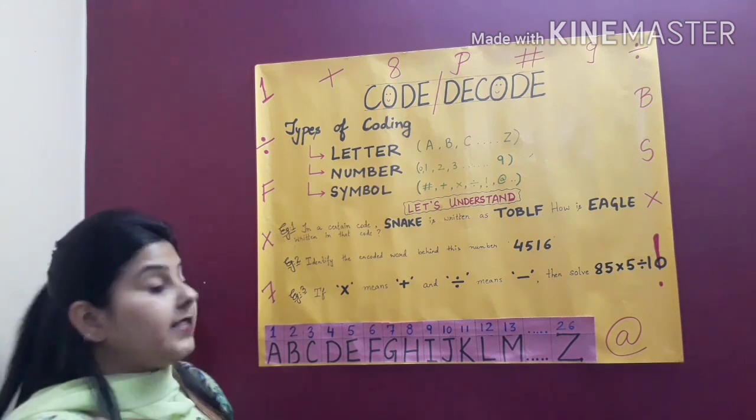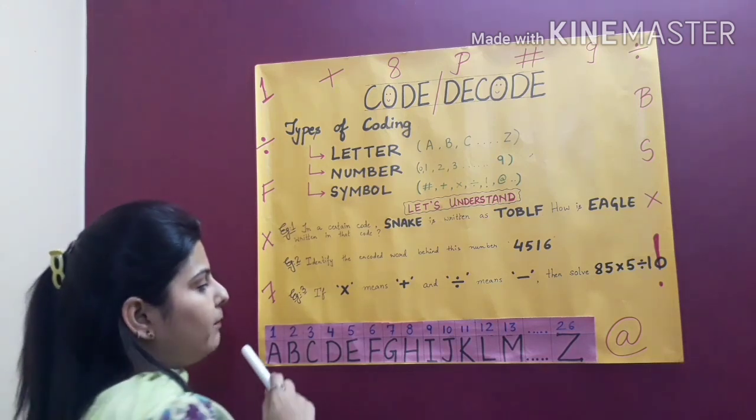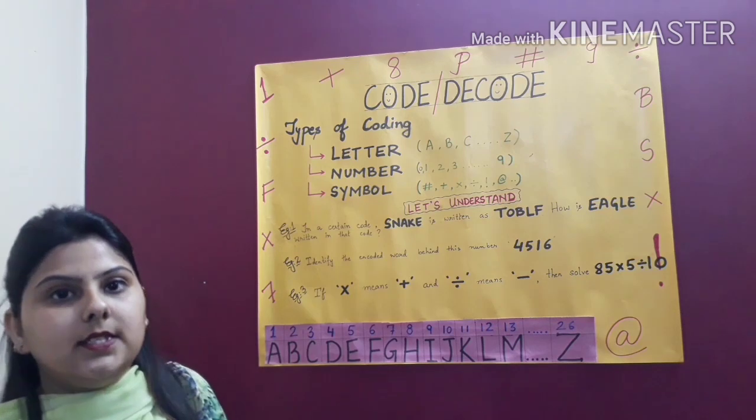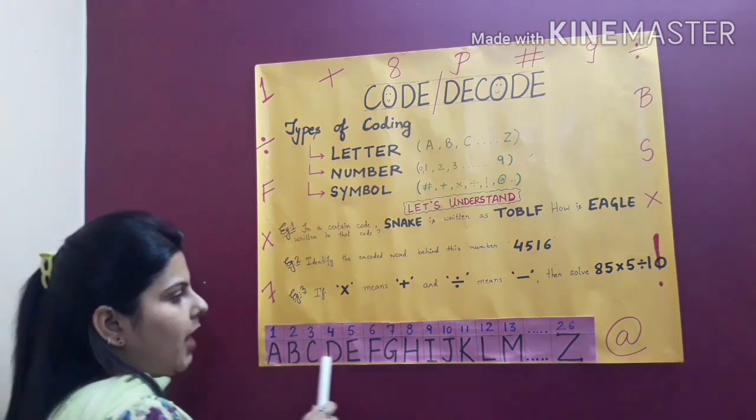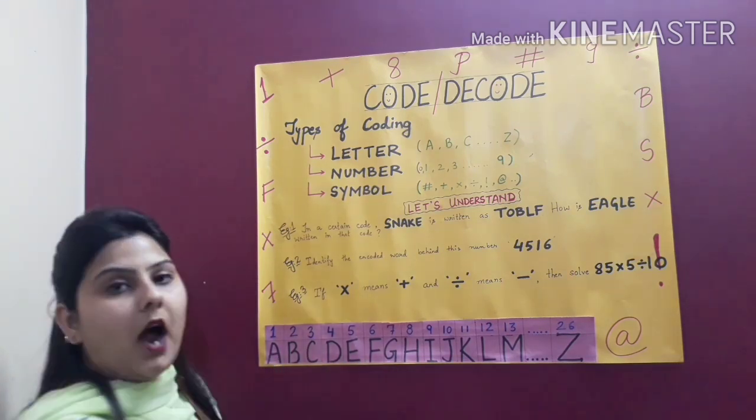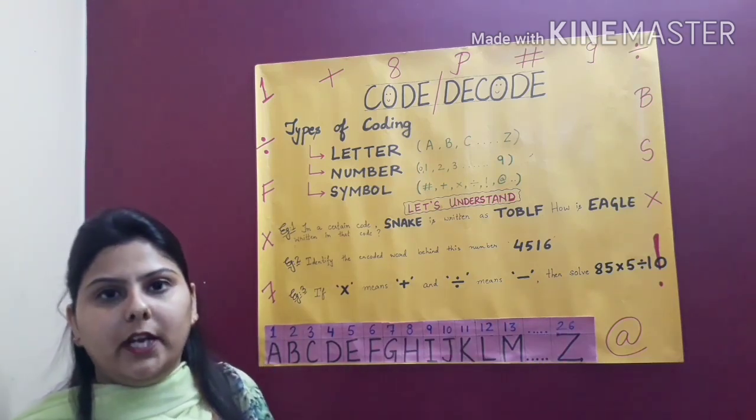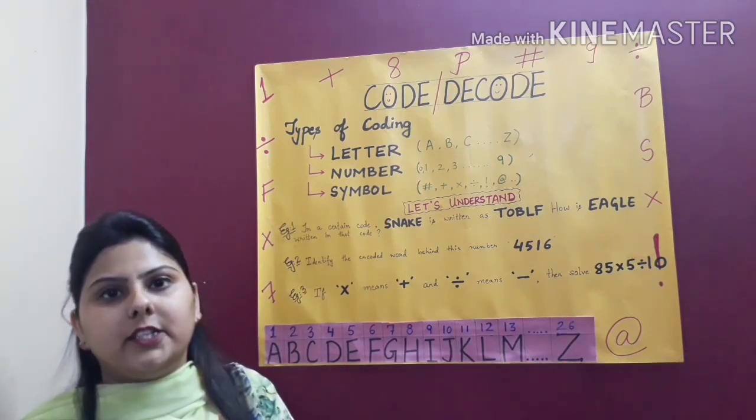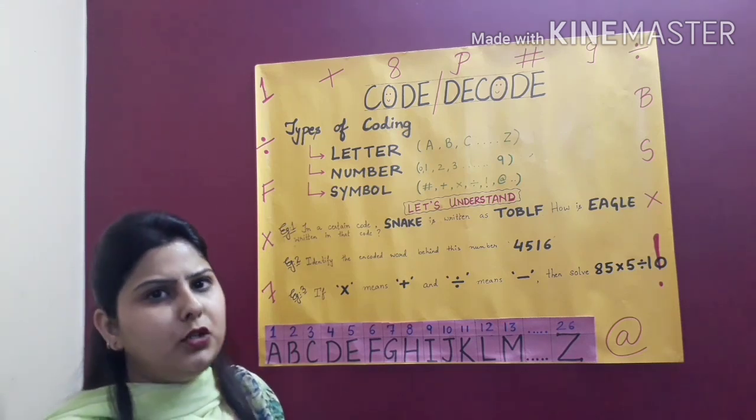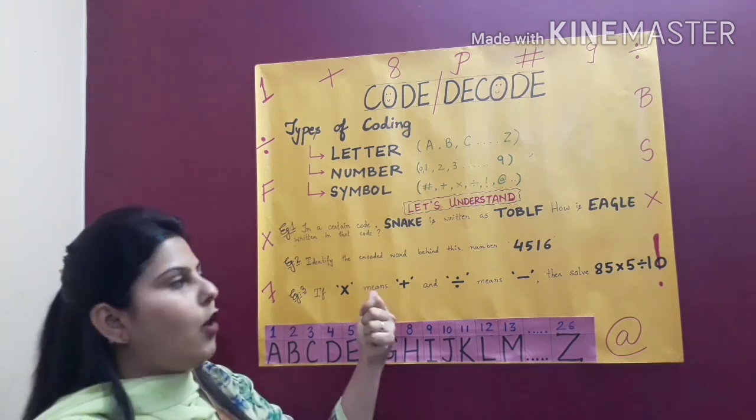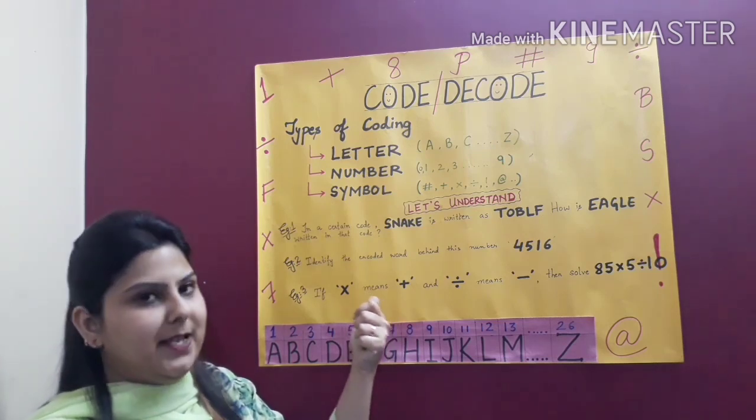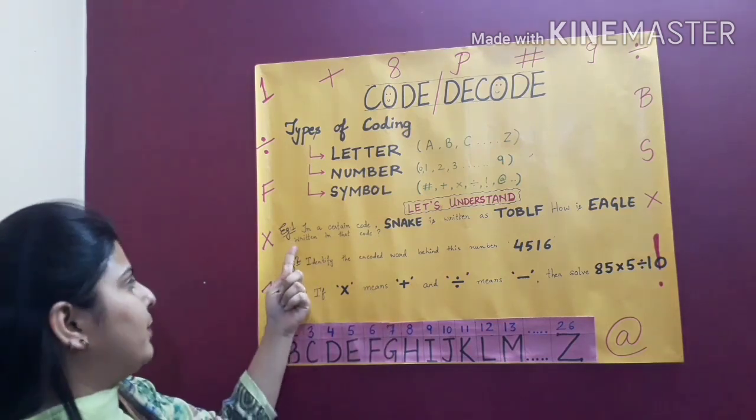Now as you can see I have made one chart over here which says that all the letters of English alphabet are numbered from 1 to 26. This is the combination of number and letter coding. Now I will teach you how to use these coding methods for encoding a particular message. Starting with example number 1.